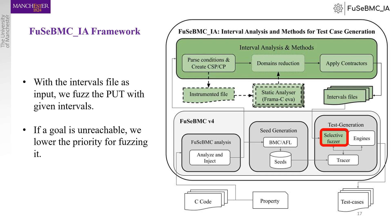Finally, we apply our analysis in the selective fuzzer. This is done by modifying the intervals for the fuzzer and having it start with the intervals provided by the contractor. Also, if the goal is unreachable, we set it to the lowest priority to be fuzzed. We also lower the priority for broad intervals to keep the goals with smaller intervals at top priority, because the produced intervals have a higher chance of reaching the goal. However, when we say the goal is unreachable, it is guaranteed that no value will satisfy the condition to reach it.